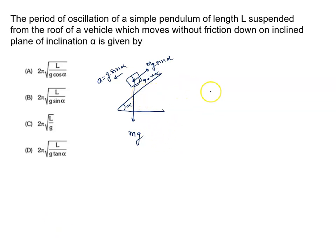If we see the expression for the time period of the simple pendulum, we know time period is given by 2 pi root L upon g effective.